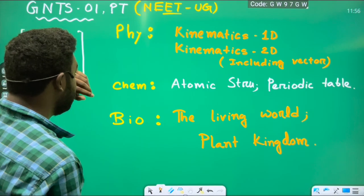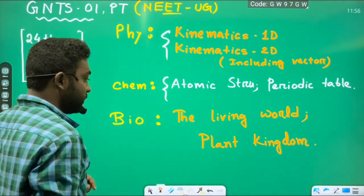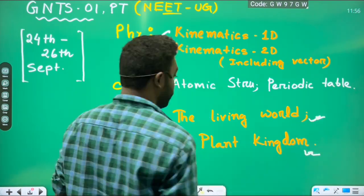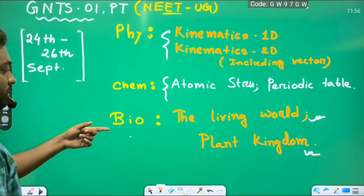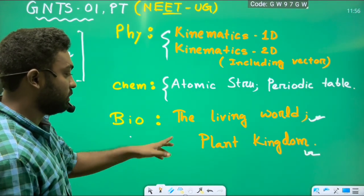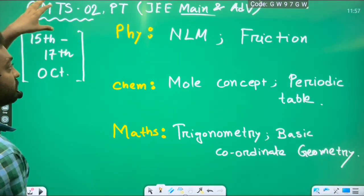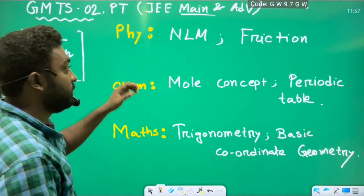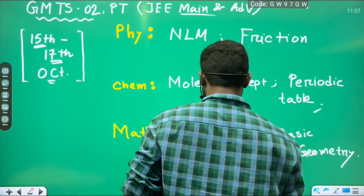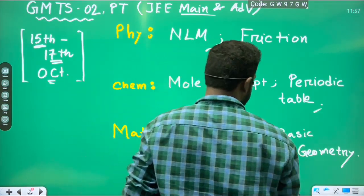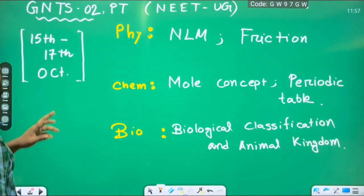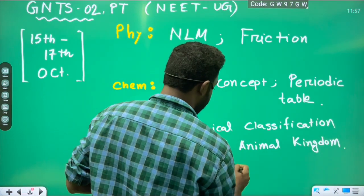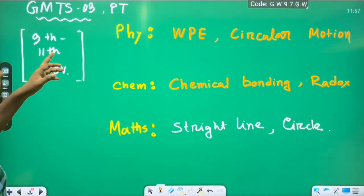For GNTS, NEET students, physics and chemistry syllabus is same. Biology will be the living world from unit 1, living world and plant kingdom. I think from unit 1, it is the first and third chapter. Next test of the series will happen on 15th and 17th in October. Physics syllabus is NLM friction, chemistry is mole concept and periodic table, maths is trigonometry, basic geometric trigonometry. Third one will be, I will provide you the PDF. For biology students, biology will be biological classification and animal kingdom.